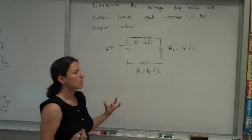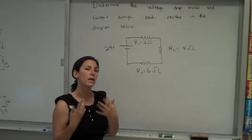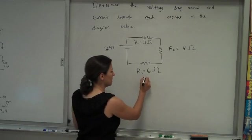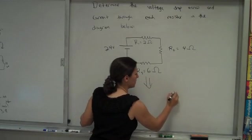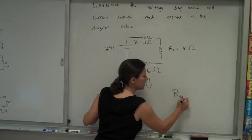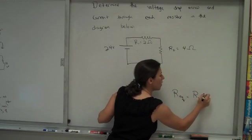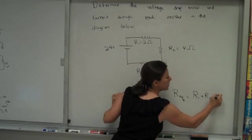What I'd like to do with these is to combine them into one equivalent resistance. In series, the way you find equivalent resistance, and this is only true in series, in parallel there's a different rule, is just add up the values of all the resistors you have. In this case we have three.